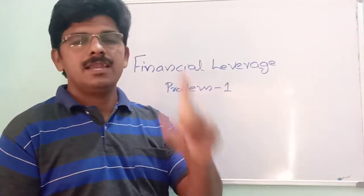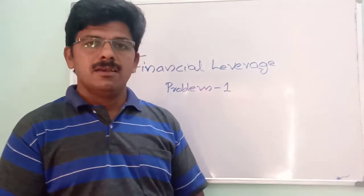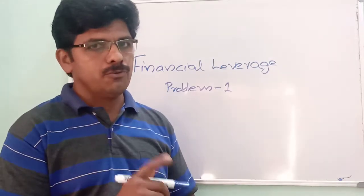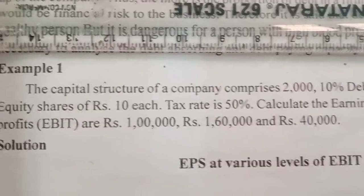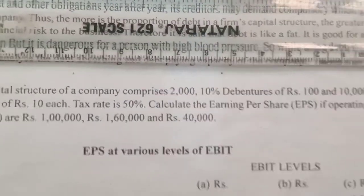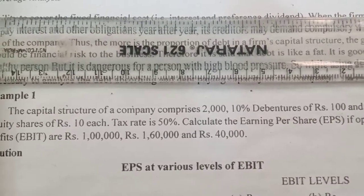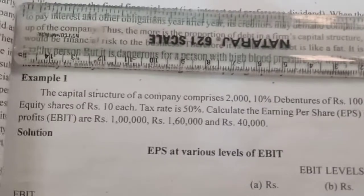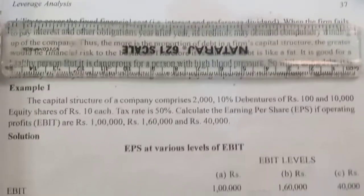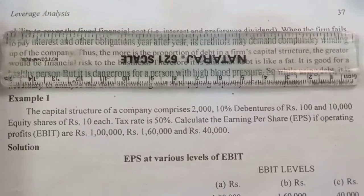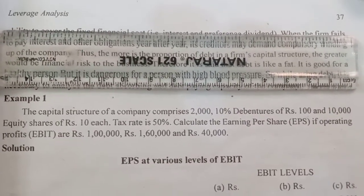Let us see the first problem on financial leverage. The capital structure of a company comprises 2,000 ten-percent debentures of rupees 100 and 10,000 equity shares of rupees 10 each. The tax rate is 50 percent. Calculate the earnings per share (EPS) if operating profits are rupees 1 lakh, 1 lakh 60,000, and 40,000. So 2,000 debentures of rupees 100 each means the number of debentures issued is 2,000 and the face value of debentures is 100.